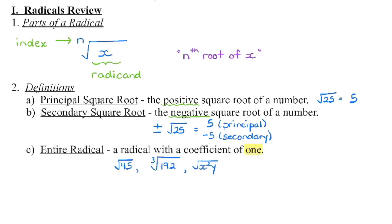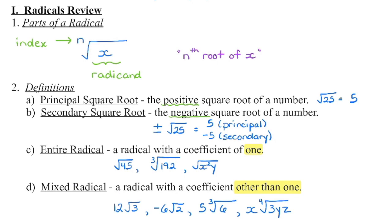To quickly review some terminology from 10C: an entire radical is where the entire thing is underneath that radical sign. So we do have a coefficient of 1 out here — this is 1 times the square root of 45 — but it appears as though we just have the square root of 45. We don't need to write that 1 down. So anytime you have a 1 as a coefficient, it is an entire radical. If we have a mixed radical, you're going to see a coefficient other than 1 out front, like 12 times the square root of 3.